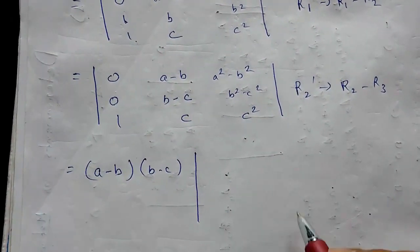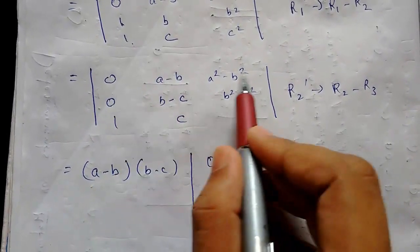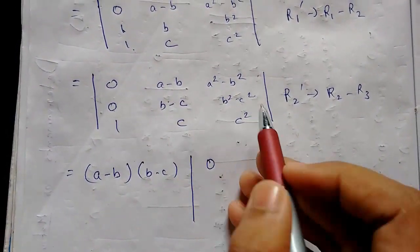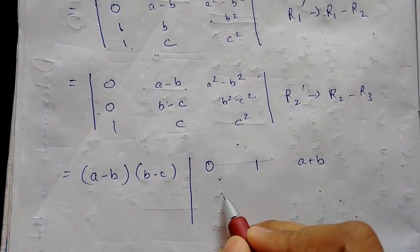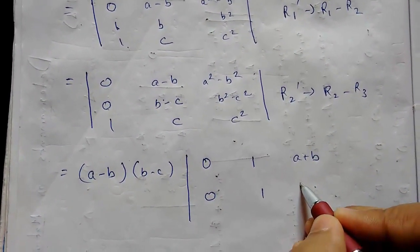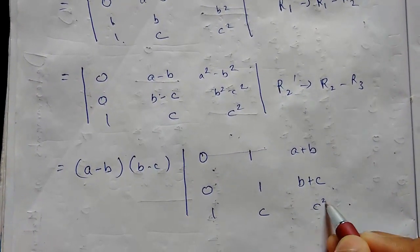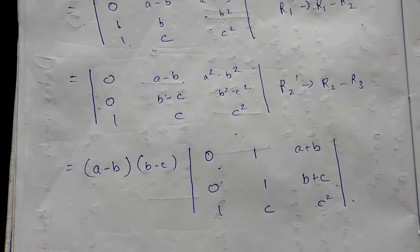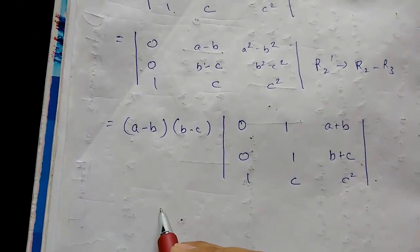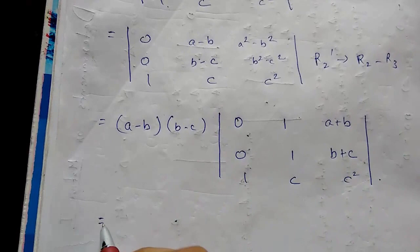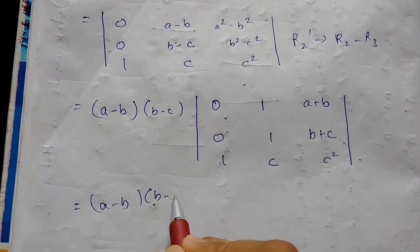Taking (a minus b) common from row 1 and (b minus c) common from row 2, we are left with: row 1: 0, 1, (a plus b); row 2: 0, 1, (b plus c); row 3: 1, c, c². Now we need to expand this determinant.